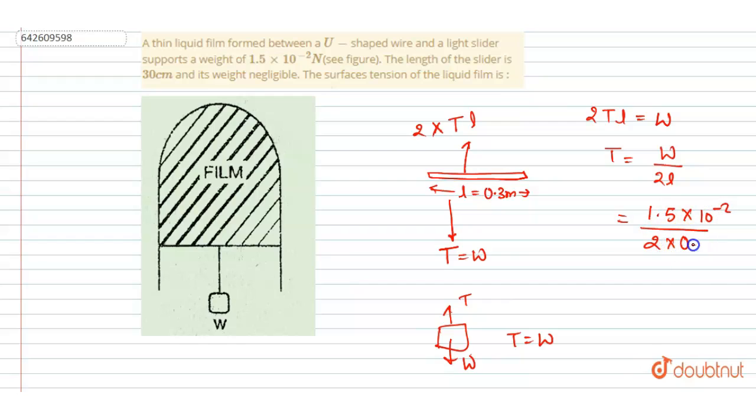L is given as 0.3, so we'll get the surface tension coefficient. The surface tension equals 0.025 Newton per meter.